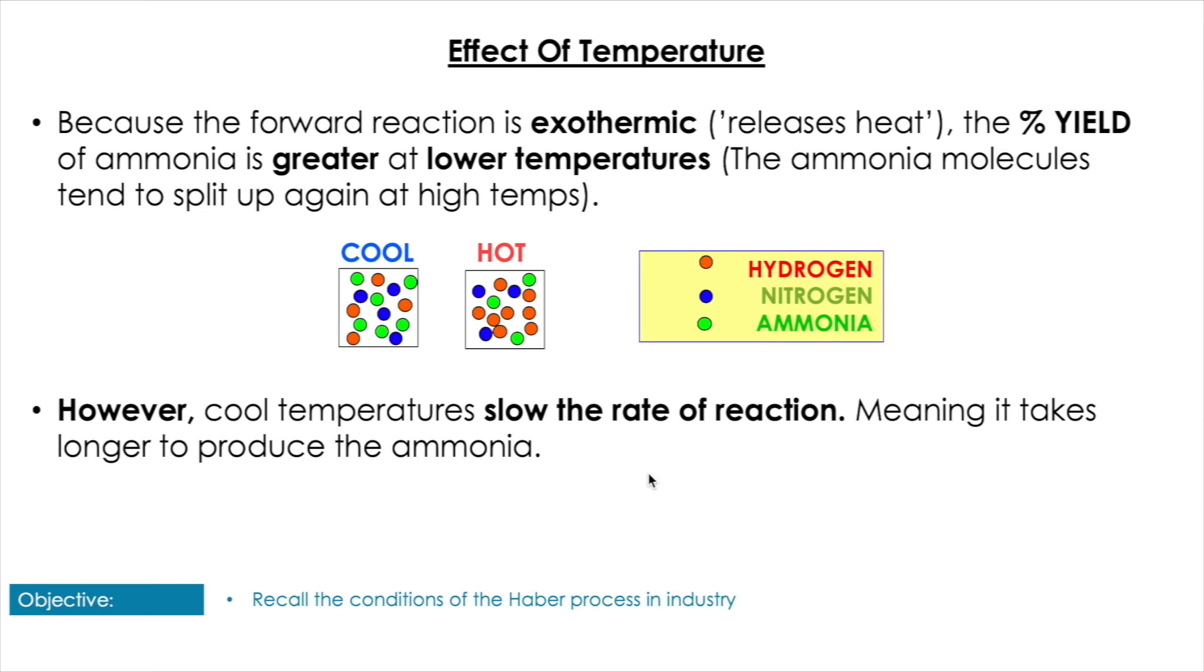First things first, we're going to have a look at how temperature affects this. Because the forward reaction is exothermic, which releases heat, that means that we would ideally like to have a low temperature. But low temperature doesn't account for the rate of reaction. So although we would have a greater yield, we would have a very slow rate of reaction.